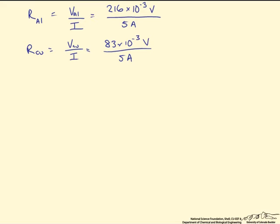I have written out the reconfigured equation from Ohm's Law so we can calculate the resistance for each material. I have converted the voltage from millivolts to volts and divided by the 5 amps in the circuit. For aluminum, this gives a resistance of 4.3 times 10 to the minus 2 ohms. For copper, this comes out to about 1.7 times 10 to the minus 2 ohms.